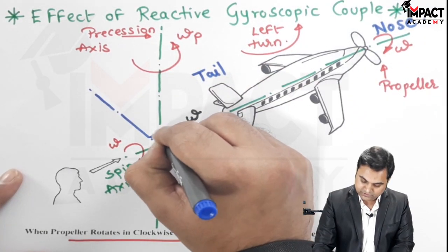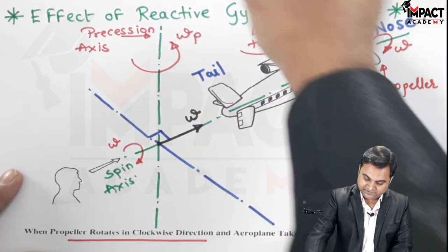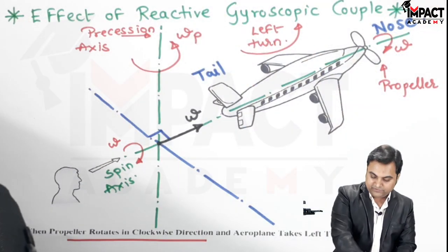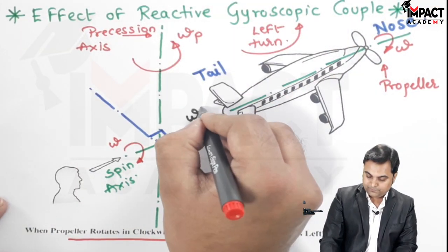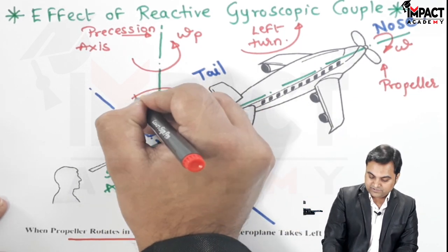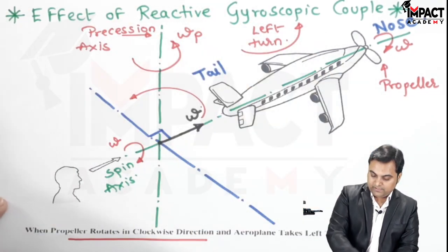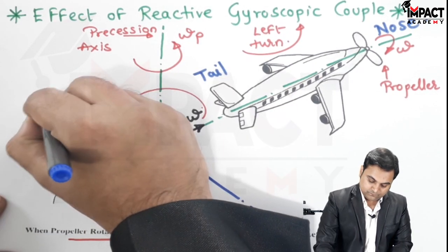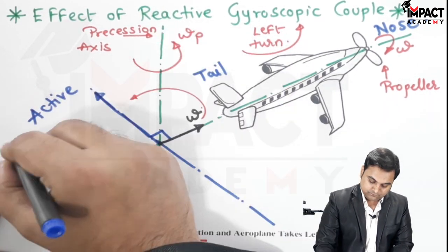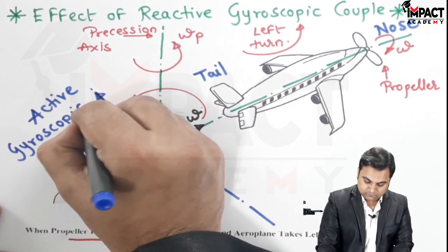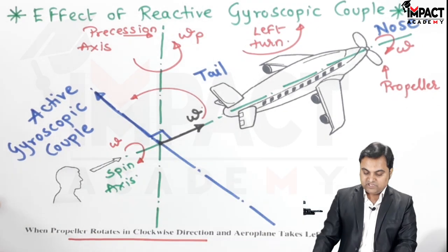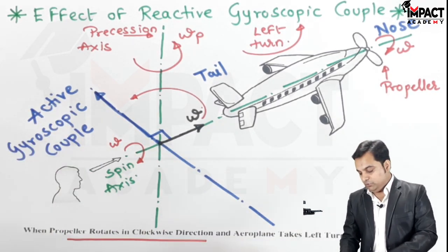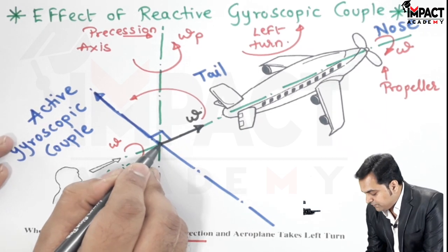This Omega has been tilted by 90 degrees along the direction of precessional velocity, looking from the top in anti-clockwise direction. This gives us the active gyroscopic couple, and exactly opposite to it would be the reactive gyroscopic couple.